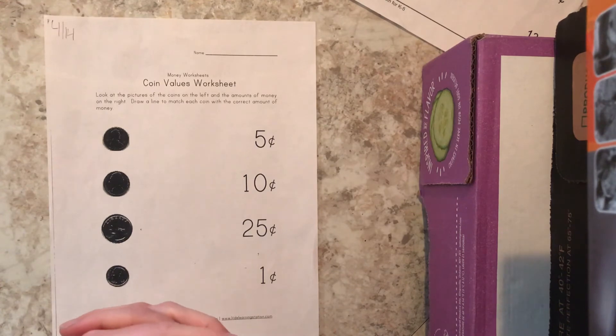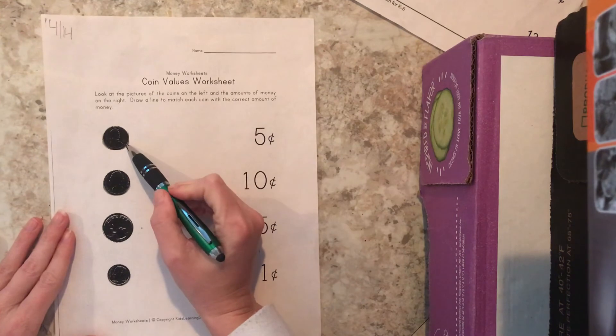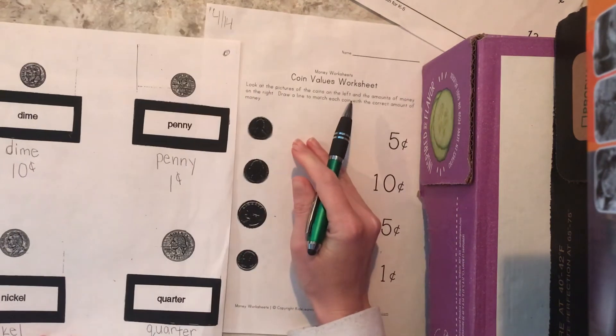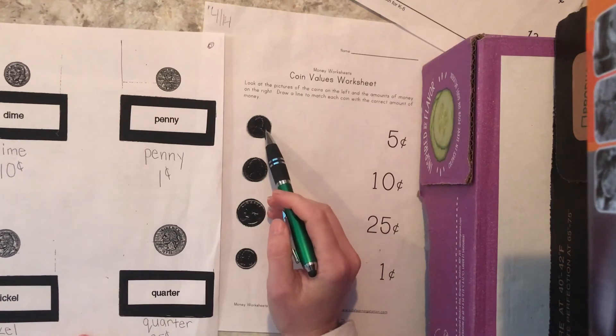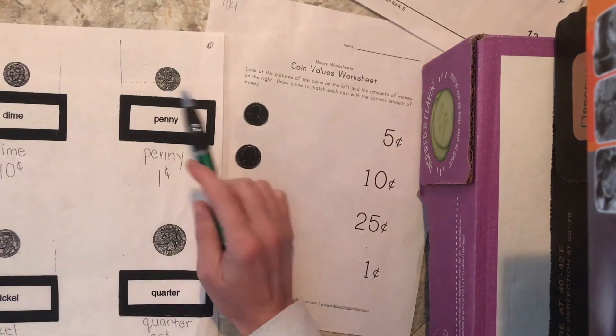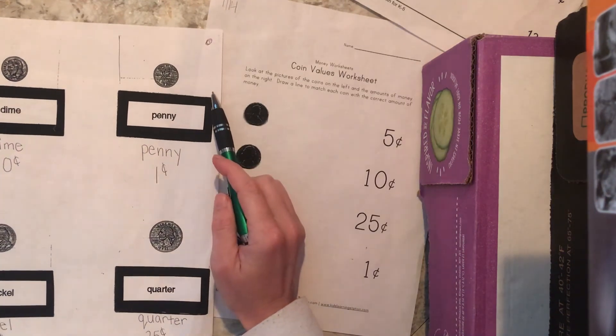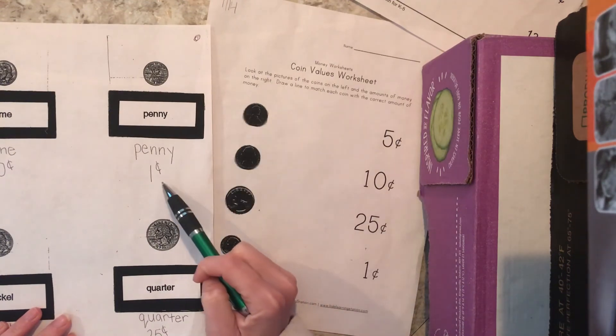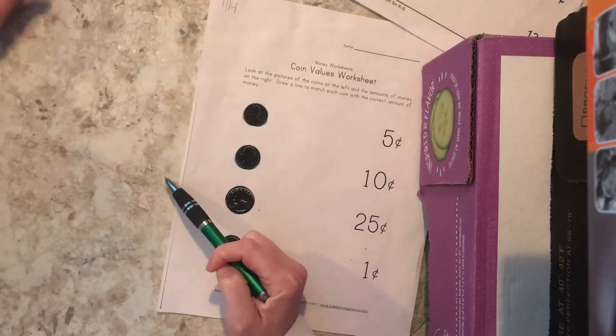This first one up here, if we can look at our coins over here, if we look closely we can tell that it looks like our penny. And remember penny penny easily spent copper brown and worth one cent, so we need to look over here and find our one that is worth one cent.